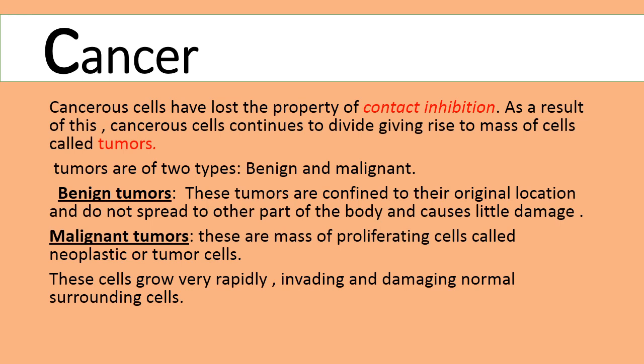Contact inhibition is a unique property seen in normal cells. Because of this property, abnormal growth does not take place in normal cells. But this property is not present in cancer cells. Cancer cells lack the property of contact inhibition, and because of this, cancerous cells divide abnormally and give rise to a mass of cells called a tumor.